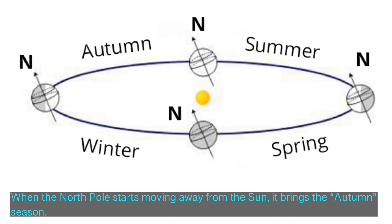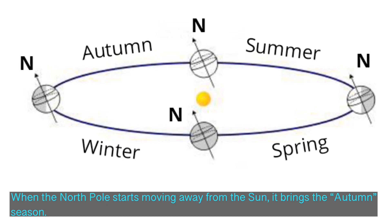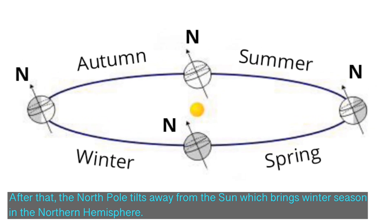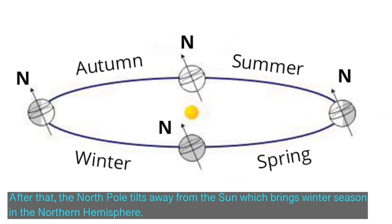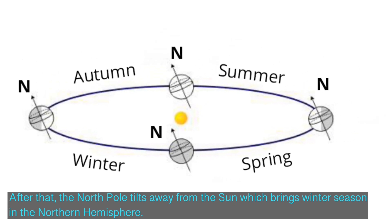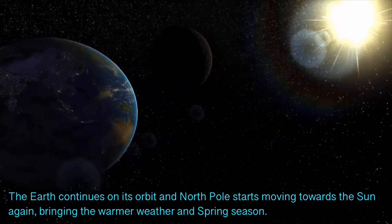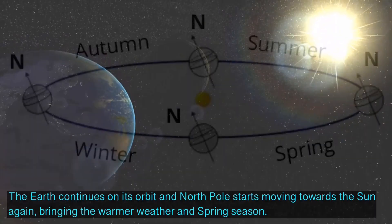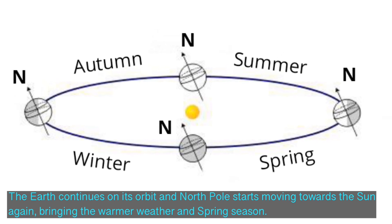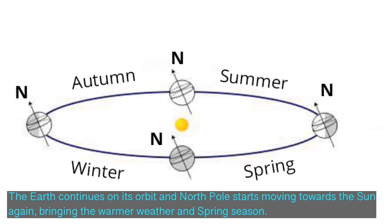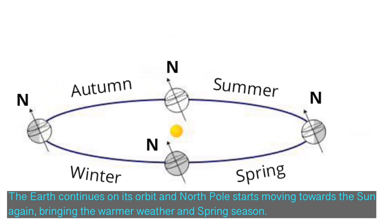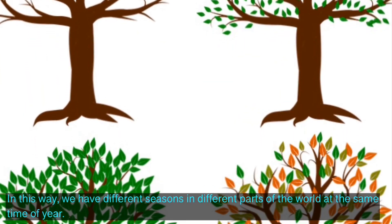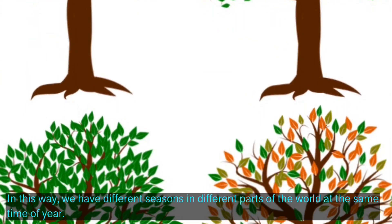When the North Pole starts moving away from the Sun, it brings the autumn season. After that, the North Pole tilts fully away from the Sun, which brings winter season in the northern hemisphere. The Earth continues on its orbit and the North Pole starts moving towards the Sun again, bringing warmer weather and spring season.